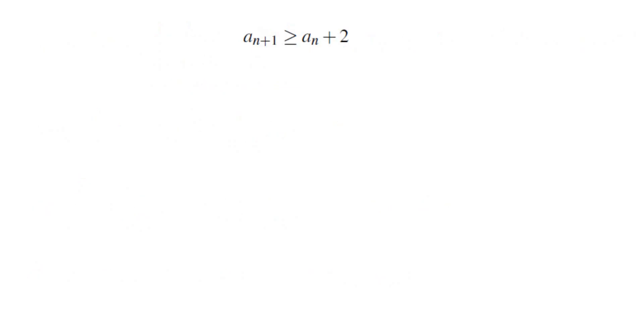So to summarize, this is what we get. aN plus 1 is greater than or equal to aN plus 2, assuming that we can prove that equality does not hold. This is great, except that this is too good to be true. Why?